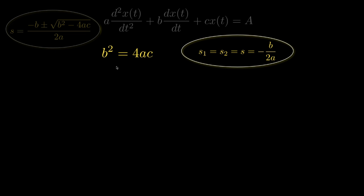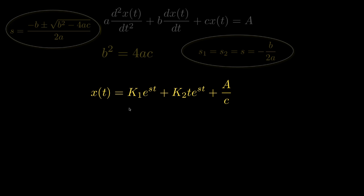It's possible that b squared will be equal to 4ac. When this happens, both of the roots s1 and s2 will be equal to some value s, which equals negative b over 2a. In this case, the natural response will be of the form k1 e to the st plus k2 t e to the st. The two exponential coefficients are the same, equal to negative b over 2a, but one of the terms is also multiplied by the time t. This factor of t must be included in one of the terms for the solution. The exponential coefficient s and the forced response a over c are determined by the original differential equation, but the constants k1 and k2 must be determined by the initial conditions.